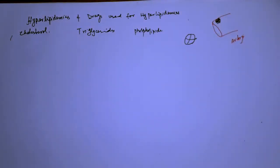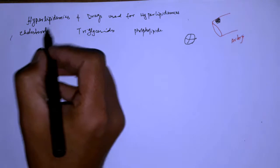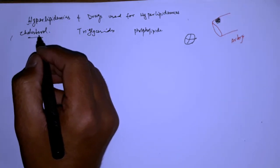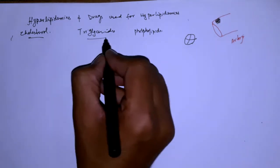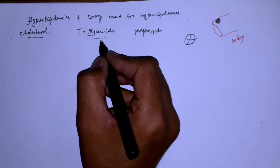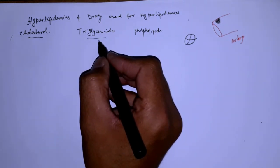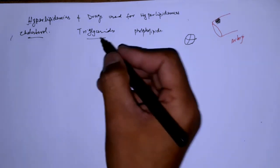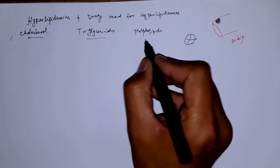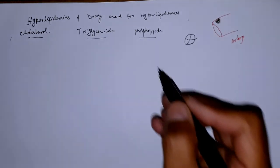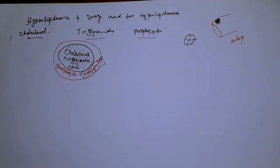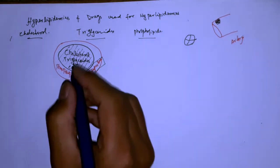Cholesterol is necessary for synthesis of bile acids, steroid hormones, and to maintain the integrity of the cell membrane. Triglycerides consist of glycerol and free fatty acids, and are an important source of energy that can be stored throughout the body. Phospholipids are major components of the cell membrane. Because lipids are insoluble in blood plasma, they have to be transported throughout the body in specialized transporters called lipoproteins.